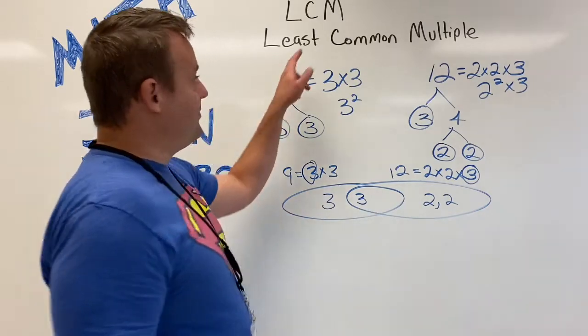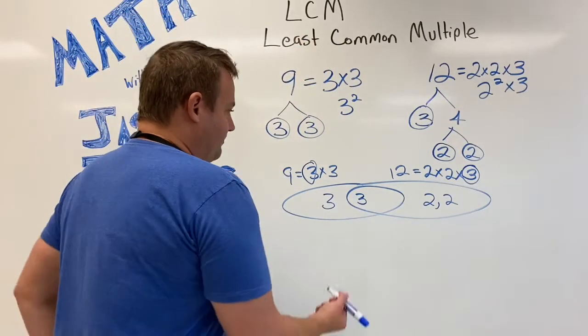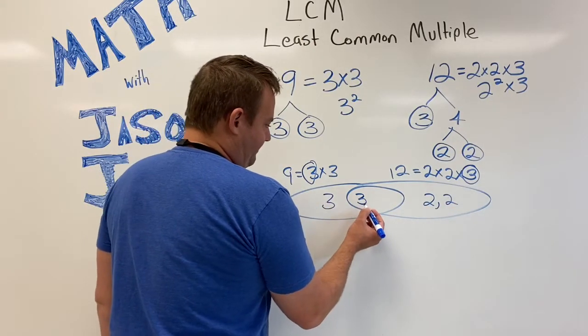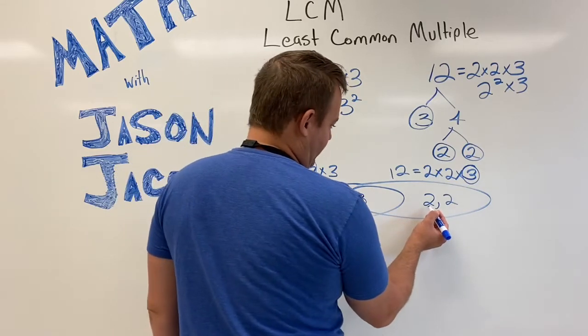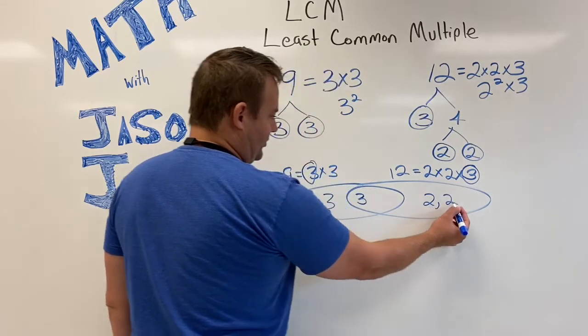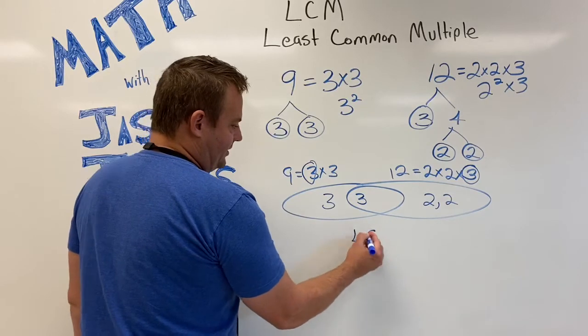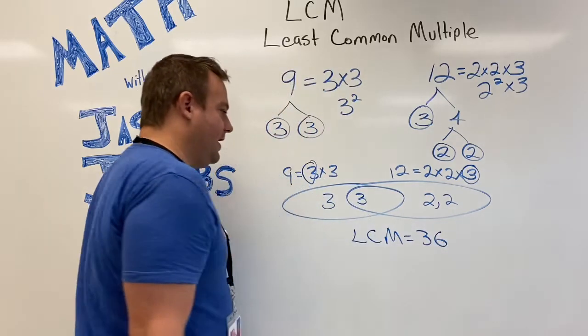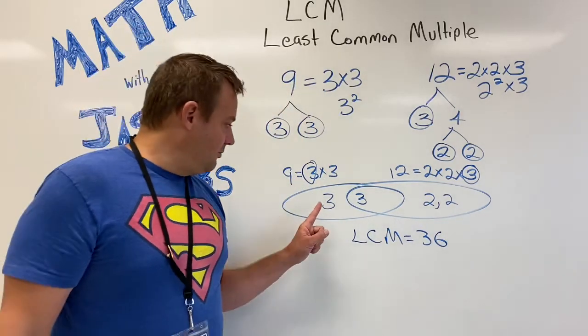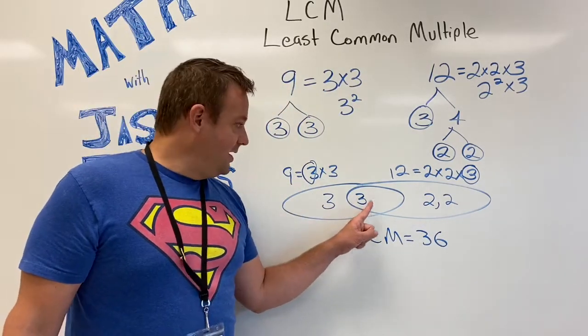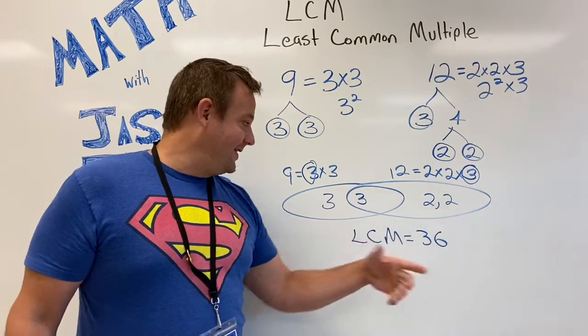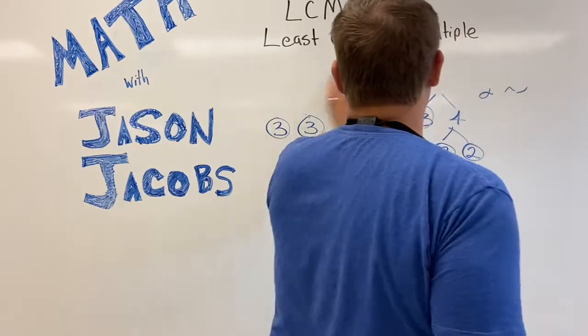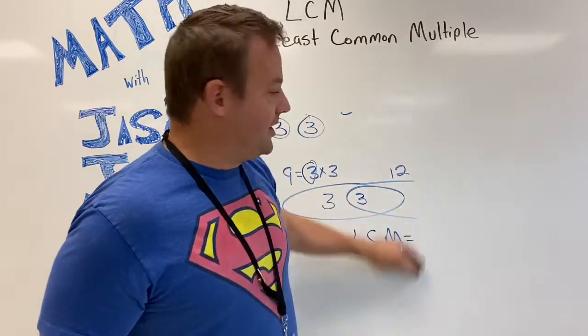To find the least common multiple, which is our goal for today, we're going to multiply all of these together. So we're going to go 3 times 3 is 9, times 2 is 18, times 2 is 36. So the least common multiple of 9 and 12 is 36. Again, how I did that was you go 3 times 3 times 2 times 2, and you got it. That's the least common multiple.